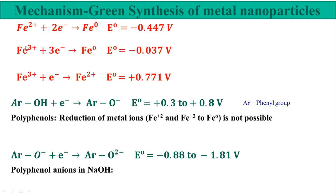With the shifted potential, all iron half-cells will react with the polyphenol anions. The potential of the iron half-cells is greater than -0.88 V, giving a positive net cell potential. Fe³⁺ is reduced to Fe²⁺, and Fe²⁺ is further reduced to Fe⁰ by reacting with polyphenol anions. As a chemist, by changing the pH you change the half-cell potential and make the reaction spontaneous. This is the role of electrochemistry — changing pH to achieve spontaneous synthesis of iron nanoparticles using plant extract.